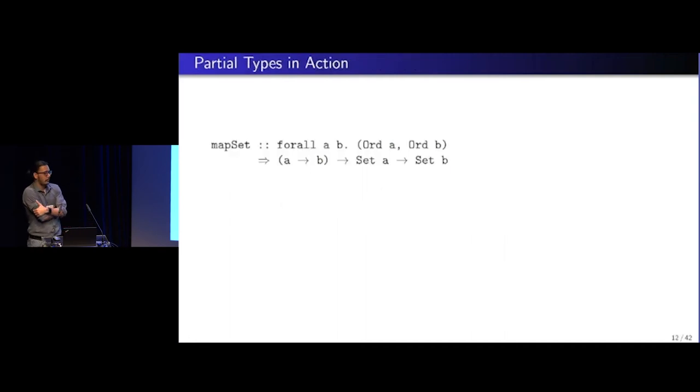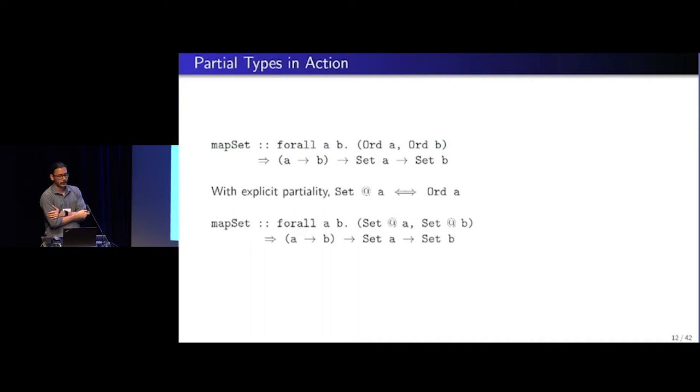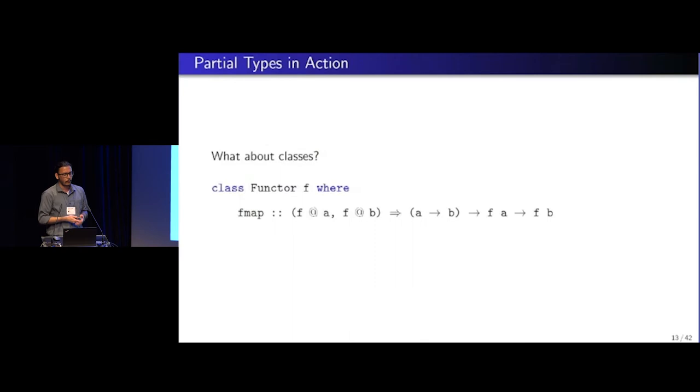So how does this work? Now suppose we have a map set, which takes in a function that maps an element of type A to B and takes in a set of type A and just maps every element using that function and returns a new set of type B. But elements are of type B. So a reasonable thing to expect would be that the elements have to satisfy an odd class. But when partiality is explicit, we see that this exactly holds when set at A holds, because that's what the definition of set at A is.